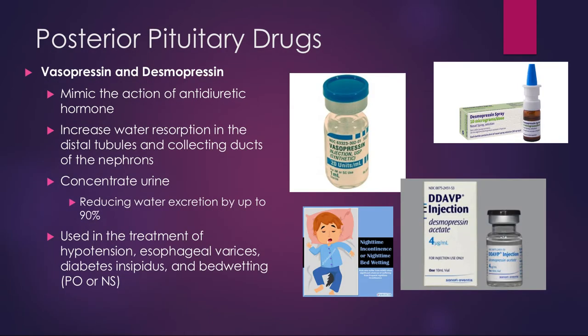In the posterior pituitary, we've got ADH. When that is synthetic, we've got vasopressin and desmopressin — basically synthetic antidiuretic hormone. We will often give vasopressin in a code situation for somebody who doesn't have a blood pressure, because it will increase their blood pressure. It also helps with bedwetting. DDAVP or desmopressin comes in a nasal spray and as a tablet for kids who wet the bed — they take it before bed, stop making urine overnight, and it wears off by morning. We also use this to treat diabetes insipidus, because diabetes insipidus is the lack of antidiuretic hormone, so we give synthetic until we treat the cause.